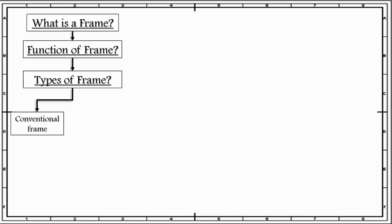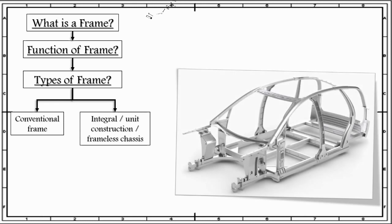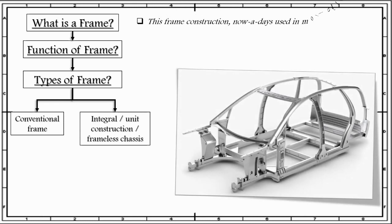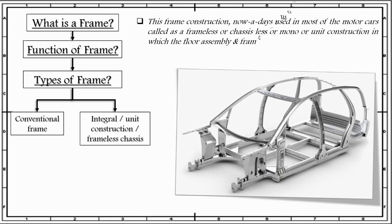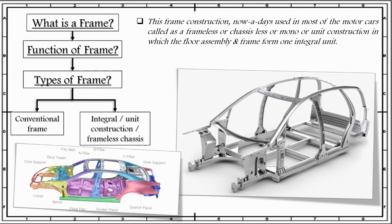The next category into which you can divide the frame is also known as integral or unit construction or frameless chassis. This frame construction, nowadays used in most motor vehicles, is called frameless chassis or monocoque or unit construction, in which the floor assembly and the part of the frame form one integral unit as shown in this figure. In this type of construction, heavy side members used in conventional frame construction are eliminated, and the floor is strengthened by cross members and the body all welded together.